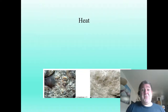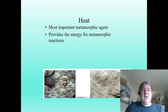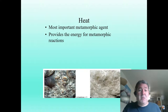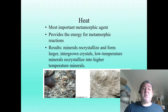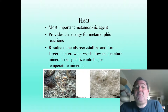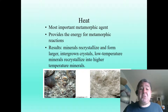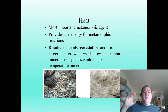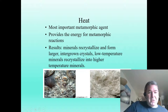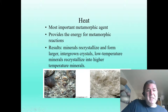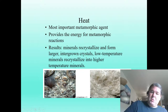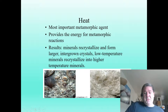Let's take a look at heat first. This is the most important of our metamorphic agents because it provides the energy - the catalyst for our metamorphic reactions. The results of heat: we generally recrystallize minerals to larger, more intergrown crystal structures. Low-temperature minerals tend to recrystallize into higher-temperature minerals. For example, that would be carbon graphite and carbon diamond. Also, a lot of these critters make their shells out of calcium carbonate, but the chemical structure isn't very stable at high heat, so it changes to a more stable form - calcite. This is sometimes called aragonite, and this is calcite in this marble here.